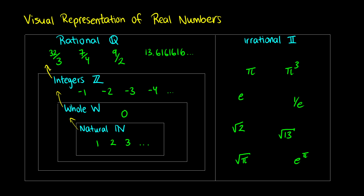All of these numbers together are called the real numbers. You don't want to think of 'real' as something that exists in the real world — you can think of it more as a one-dimensional number. When you write the number itself, you're just writing one thing down, not a pair or some expression, just a single number. When you learn about complex numbers later, that means you have a two-dimensional number.